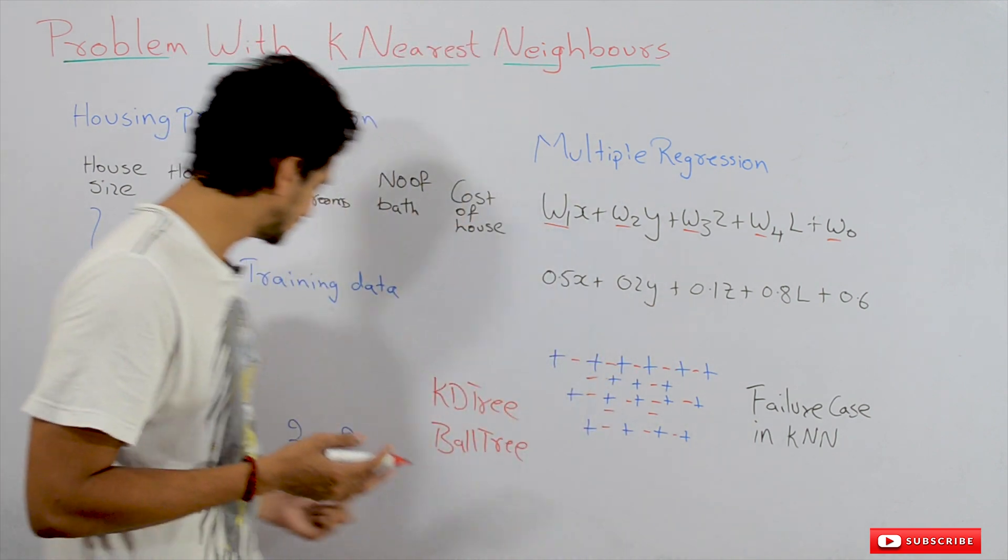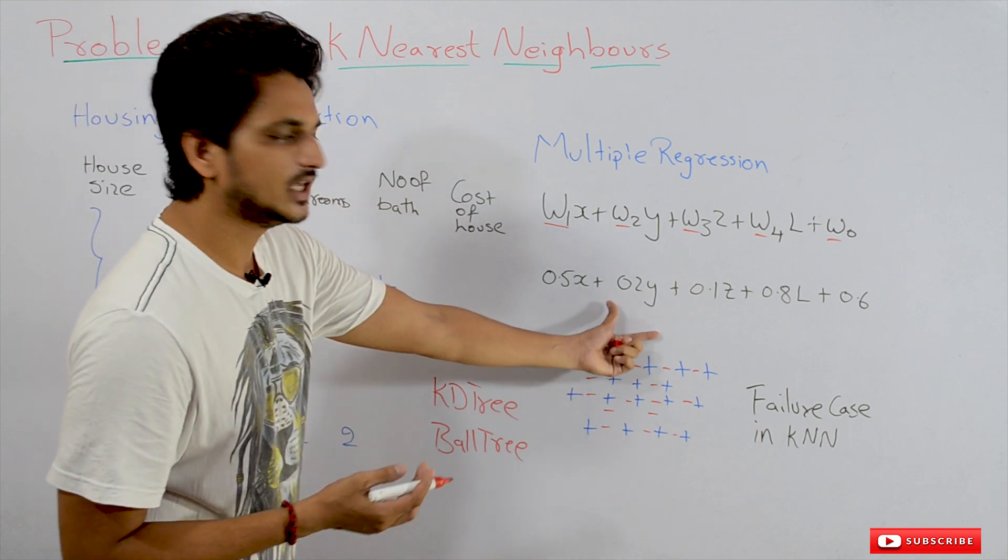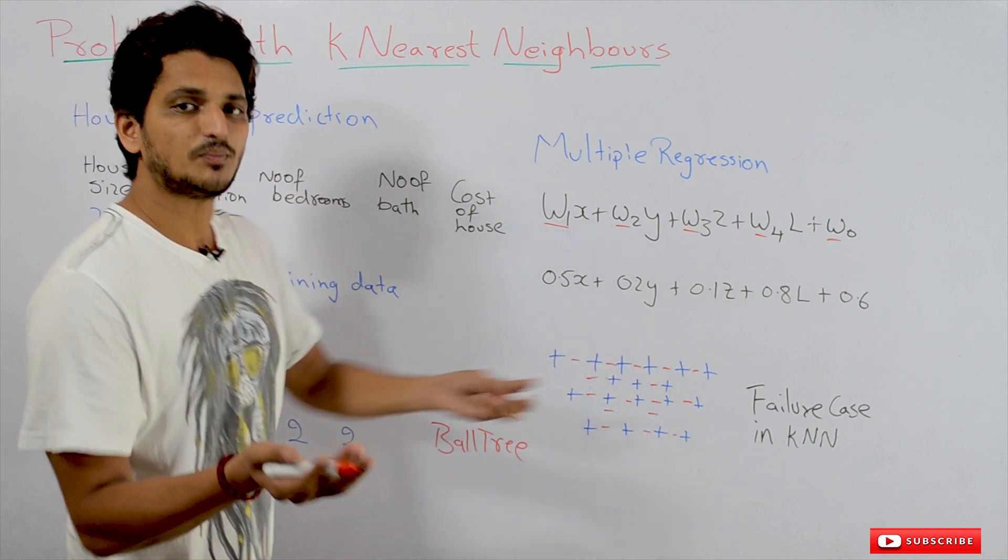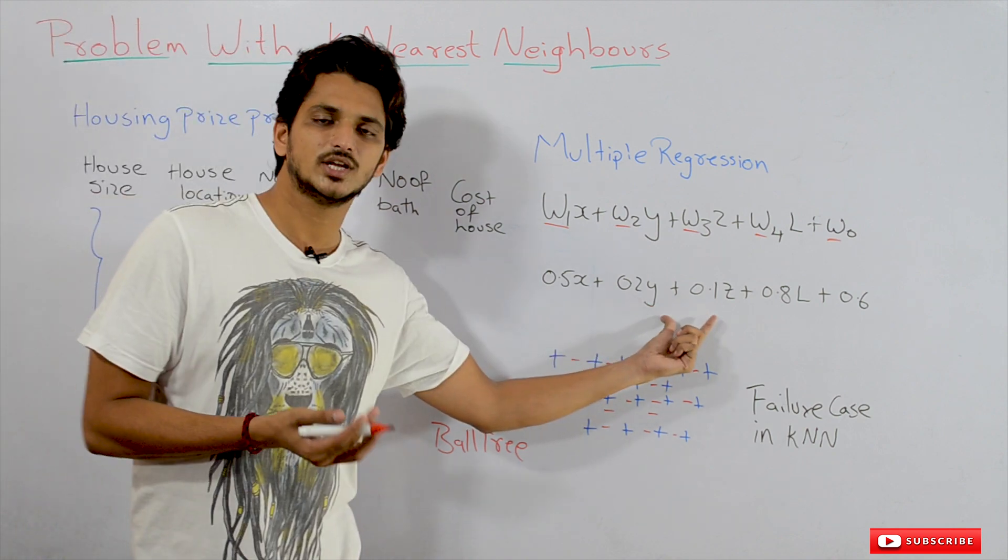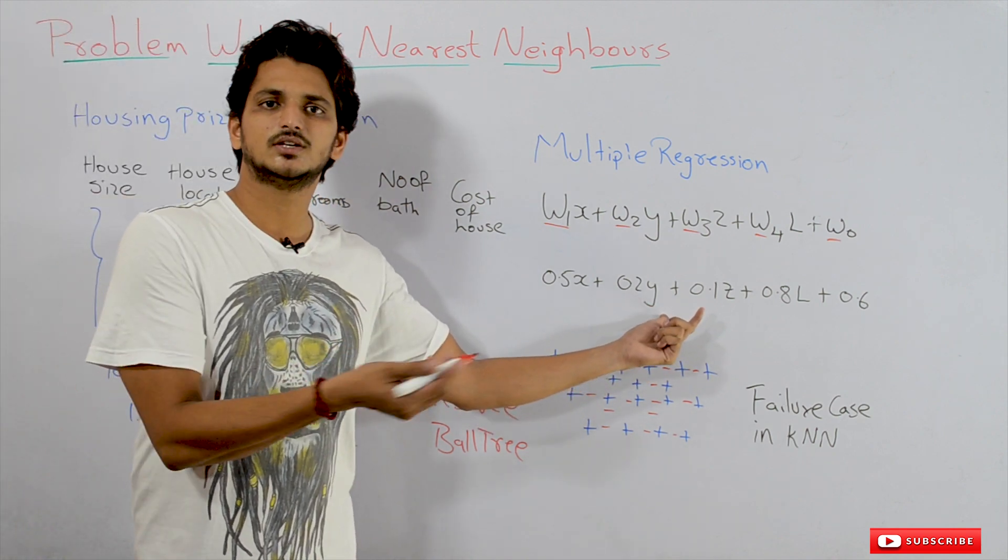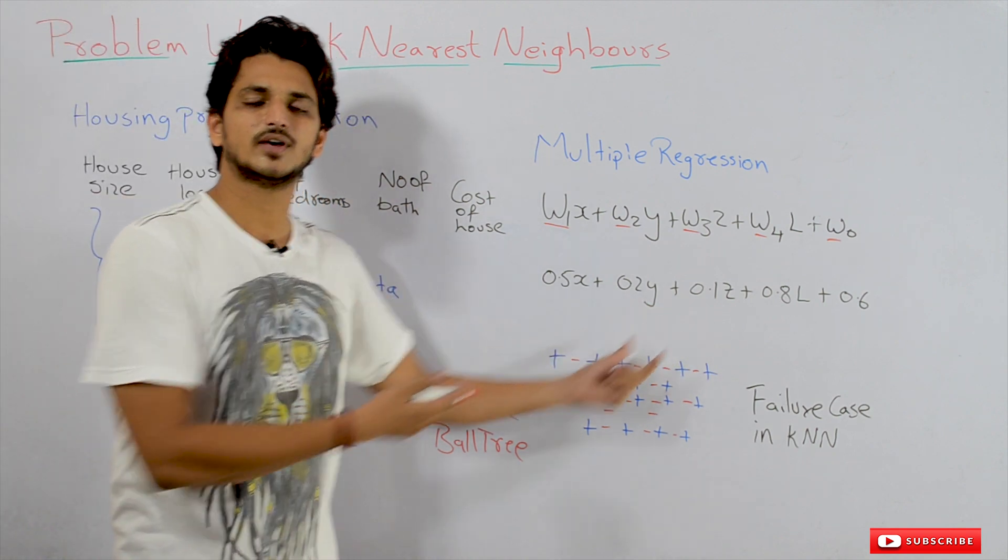See how simple it is - just substitute the values in the equation to get the prediction. If you're running a real estate website, you can place this equation on your website and easily give predictions for housing prices. That's the ease of parametric models.